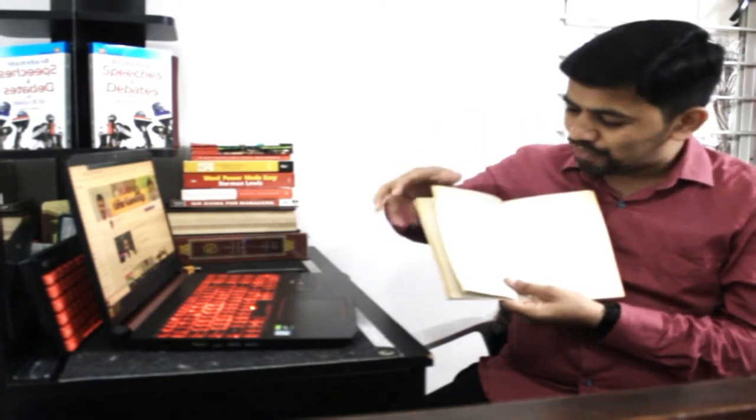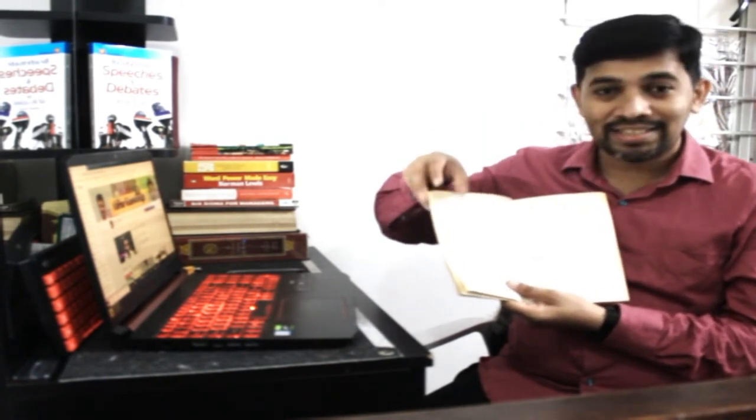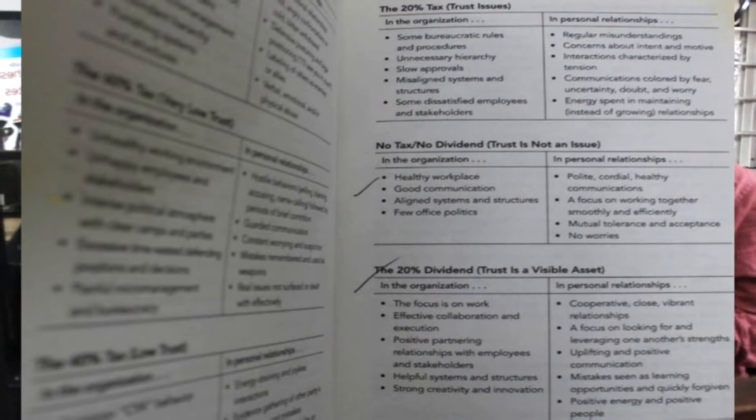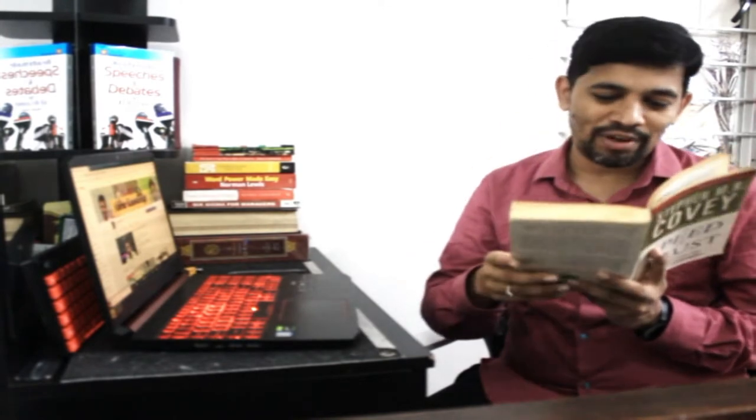And then it has given all of the values. For example, it starts from 80 percentage tax, that means 80 percentage deduction in trust, 60 percentage, 40 percentage, 20 percentage, and with no deduction, no strong trust and all that. He has given a wonderful comparison of these two situations. Take an example of that.